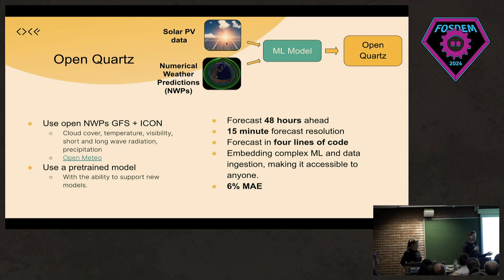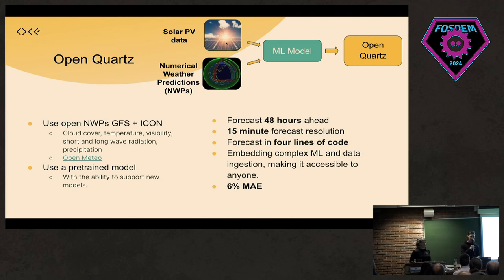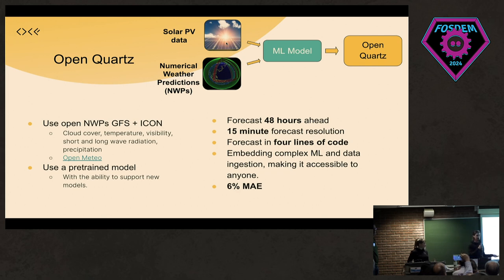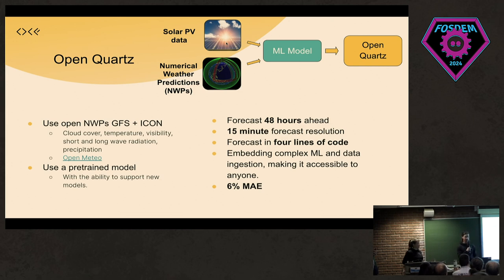This brings us to Open Quartz, the open source forecast. This uses open NWPs — primarily the GFS, the American Global Forecasting System, and ICON, created by the German weather service DWD and widely regarded as the most accurate free-to-use weather service. We take things like cloud cover, temperature, and visibility and pull this data from Open-Meteo. Using our pre-trained model, we're able to create a forecast up to 48 hours ahead at a 15-minute resolution and do all this in four lines of code. The error is not too much worse compared to our other models that use slightly more up-to-date information. There's no satellite imagery here because this is something you can run on your own computer using our pre-trained model.